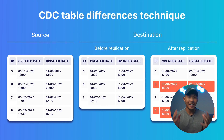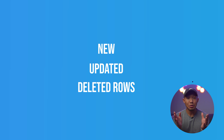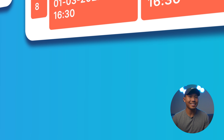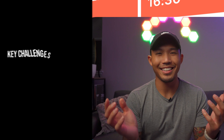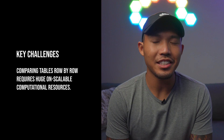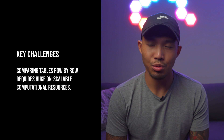The second method is called table differences. This method identifies the difference between the source and destination tables to detect new, updated, and even deleted rows. To spot these differences, you can use a SQL query or built-in tools provided by some of these databases. A key challenge is that identifying changes row by row requires extensive computational resources, so it's not as efficient.